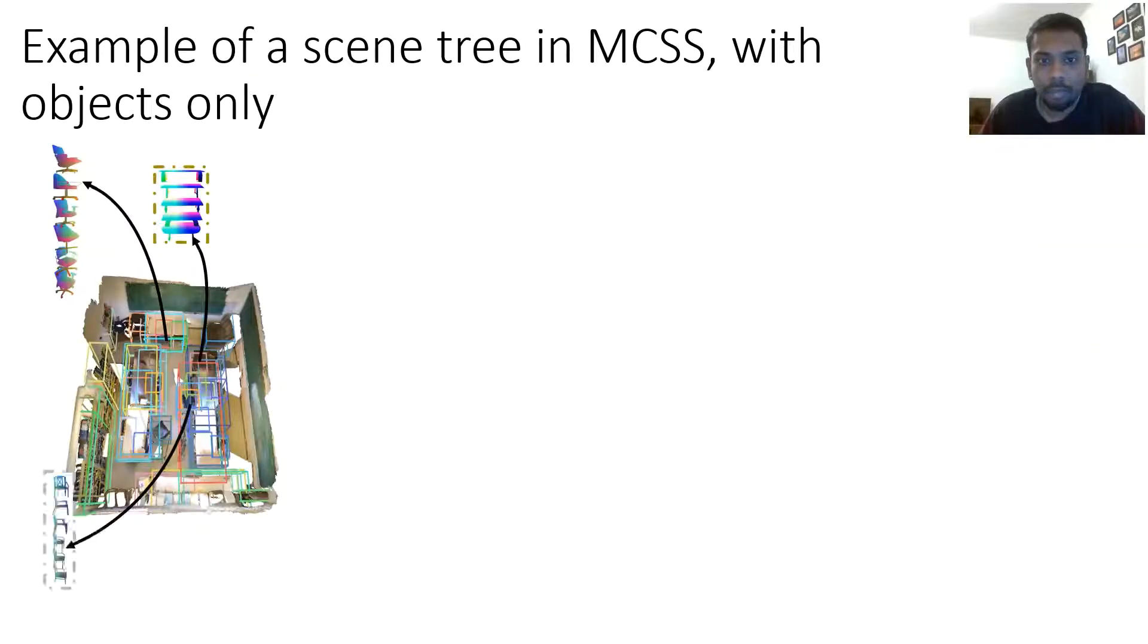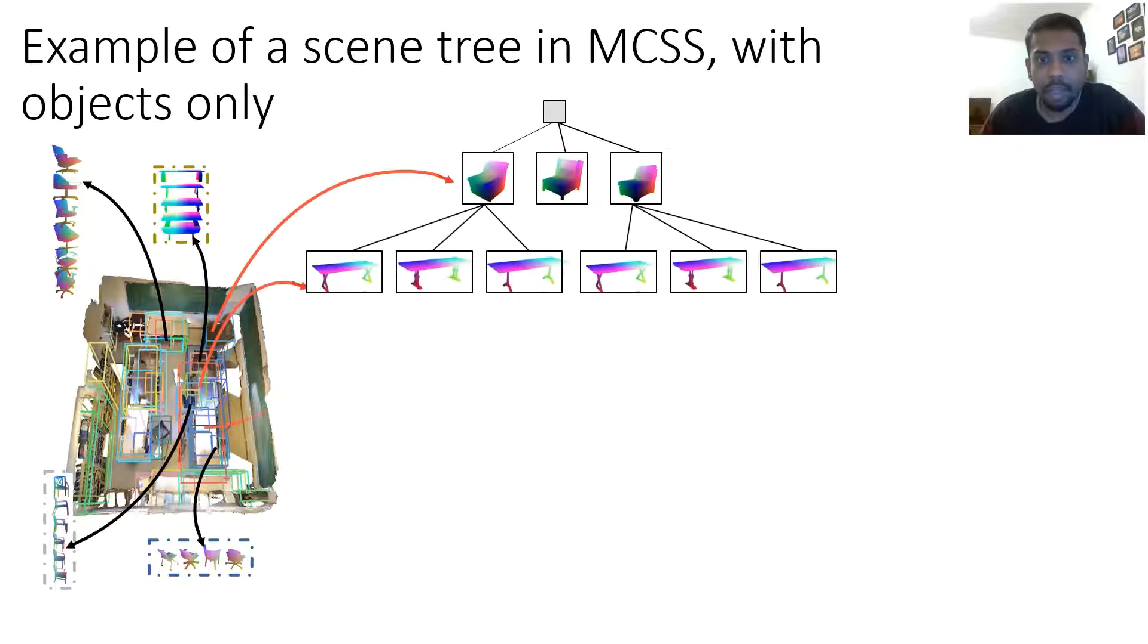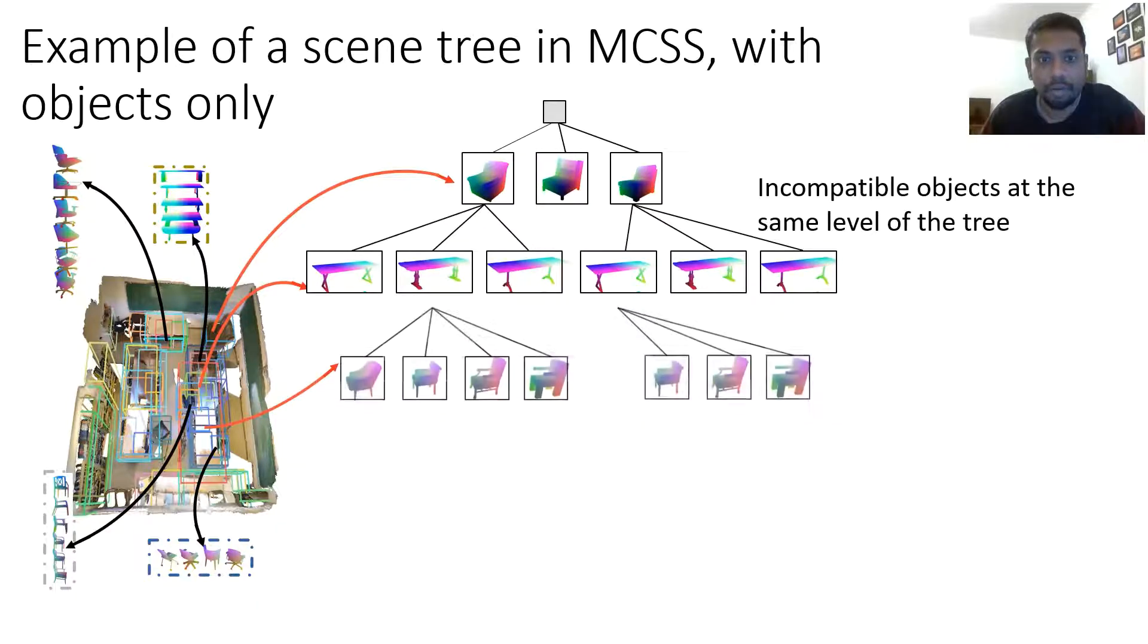We obtain object proposals by first detecting the objects in the RGBD scan, followed by proposing CAD models for each detected object. The scene tree for the objects is created by having a set of mutually incompatible objects at the same level of the tree.